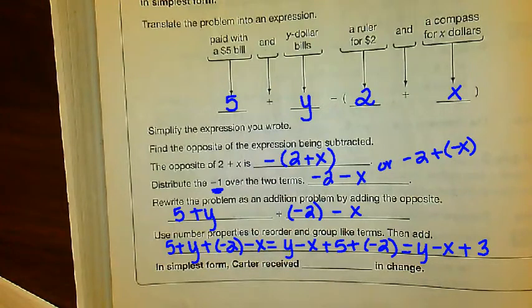Now, it doesn't matter what order you write this in. I'm going to leave it just like that. You could write 3 - x + y. Remember, just whatever is in front of that number carries along with it. So regardless, x has to be negative, y is positive, and 3 is also positive. So in simplest form, Carter received y - x + 3 in change. Now, I understand that sounds silly because obviously Carter received a certain amount of money. But remember, we don't know how many dollar bills he has, and we don't know how much the compass is. So the purpose of this is once we did find this information, we could substitute our numbers in and easily solve the equation.